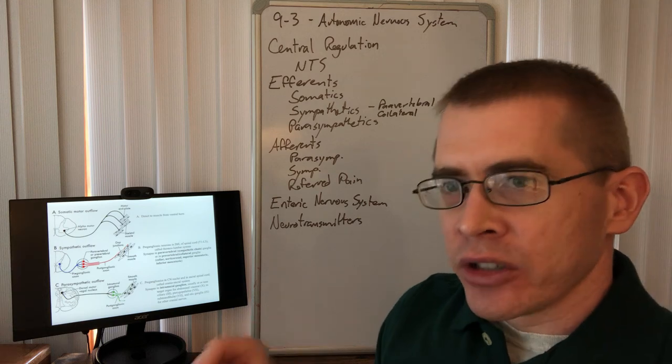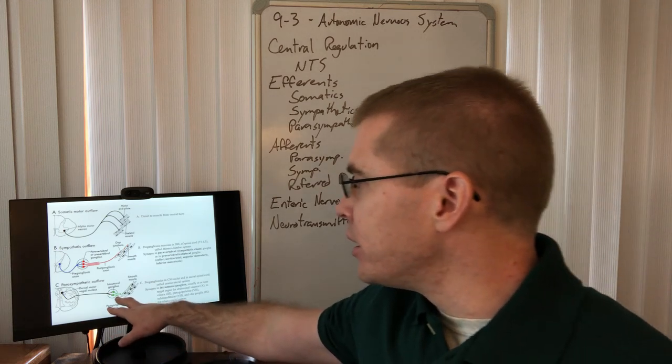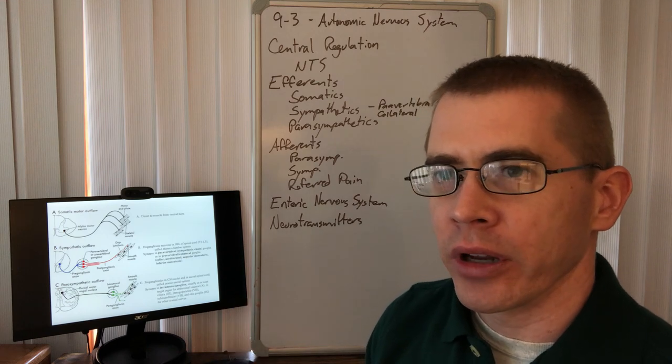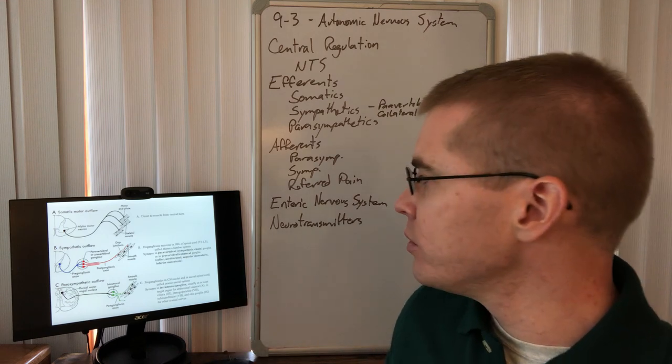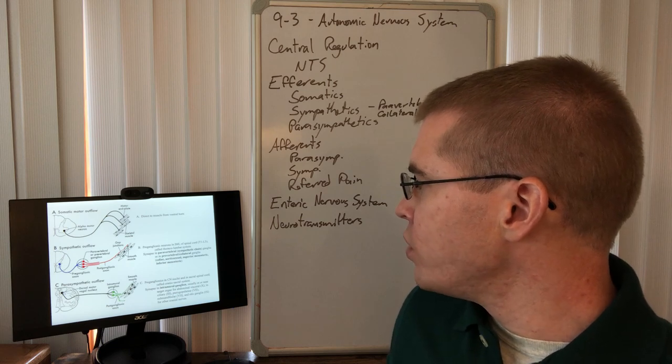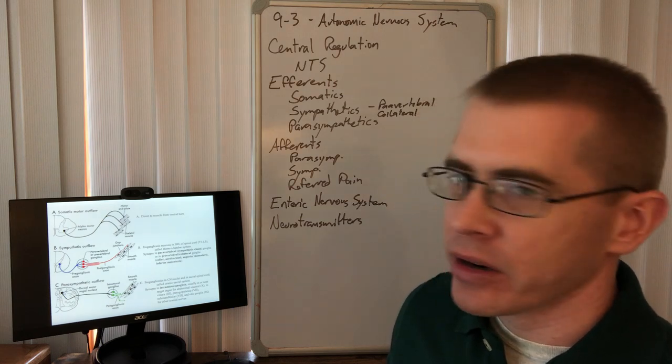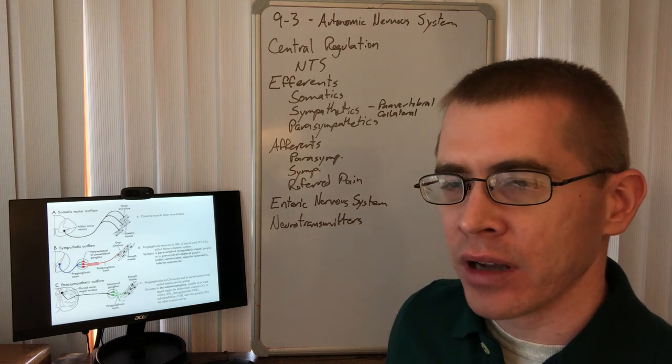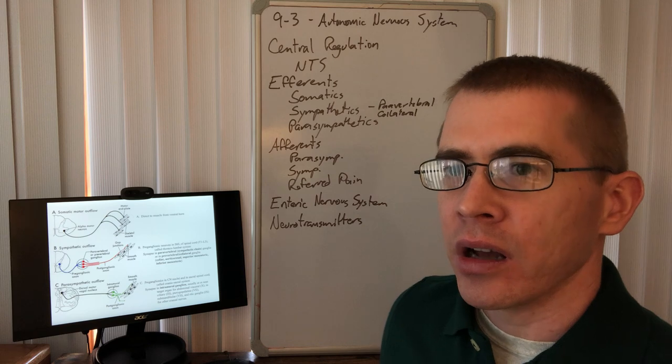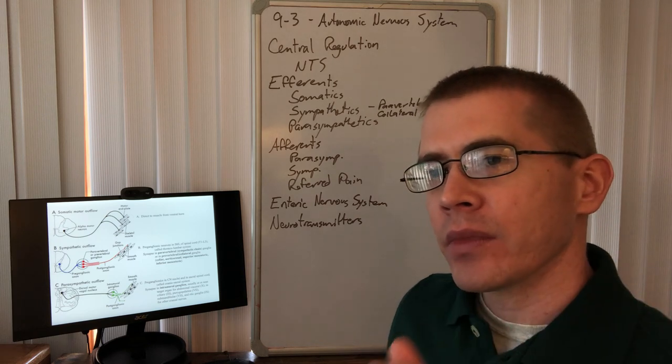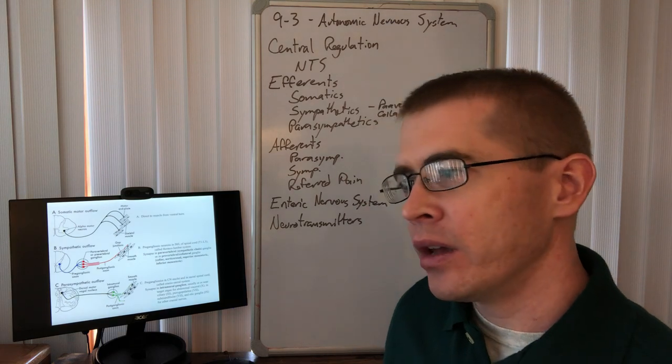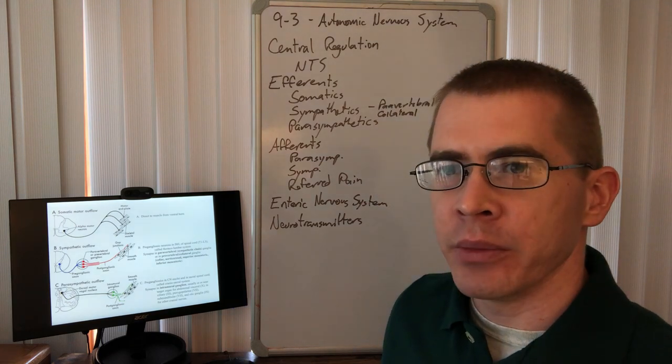So in so doing, that intramural ganglion is named because it is within the wall of the organ. So pretty easy there. We have some of these parasympathetics in the head that we've already talked about, the ciliary, the otic, etc. So now we're talking about these intramural ganglia within the thorax abdomen region.